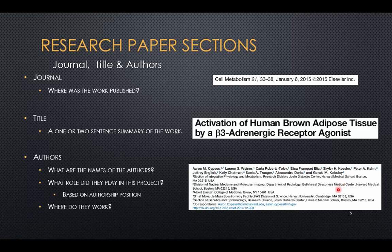Something is different about this particular paper, because when we look at the correspondence section, it gives the first author's name. Usually the most senior author, found last in the list, is the person who handles correspondence. In this case it's the first author, which may give you a clue that the first author may not be a junior author or graduate student, but could be a senior person, or someone for whom this was their project to the degree where everyone else concedes they should handle correspondence because they know the work best.